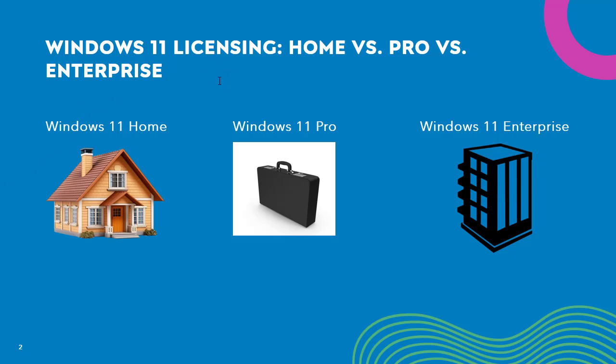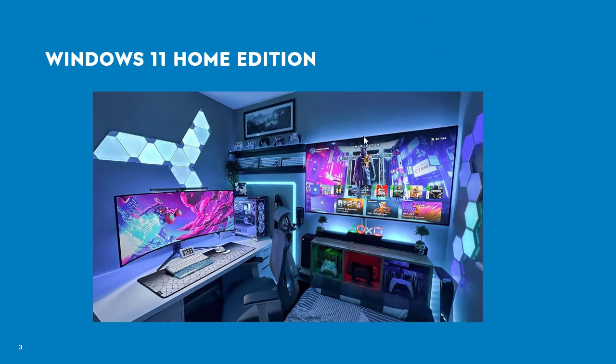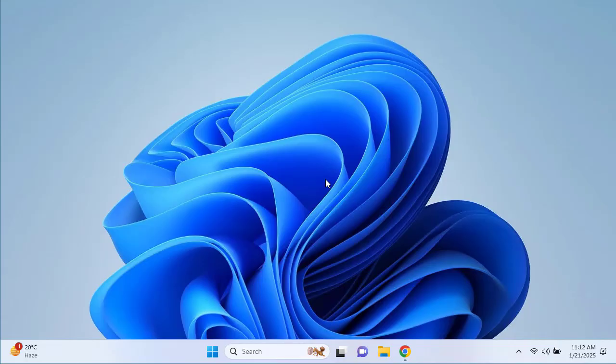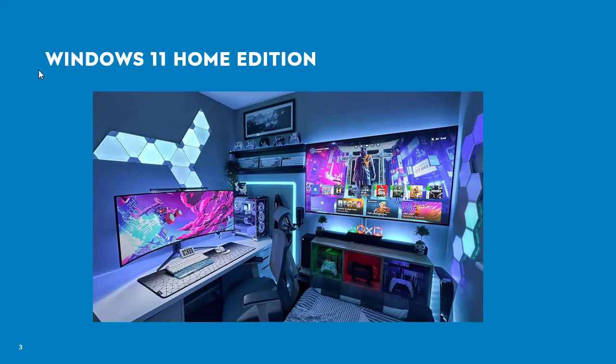Windows 11 Home is perfect for everyday users because it includes core features like redesigned smart menus, Microsoft Edge, access to the Microsoft Store, and Xbox integration for gamers. However, it lacks advanced features like BitLocker and Remote Desktop. The version used in these Windows 11 videos is not the Home edition, which is why BitLocker and Remote Desktop are visible here.